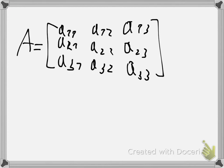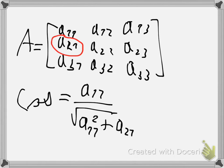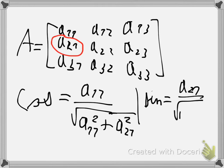You choose what element you want to eliminate. Your cosine will be given by the element at the top of the vector — in the first column vector of A, that's A(1,1) — over the square root of A(1,1) squared plus the element you want to eliminate squared. For sine it's similar — it's the inverse: the element you want to eliminate over the square root of that element squared plus the top element.